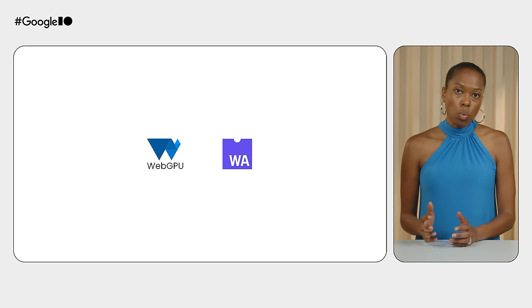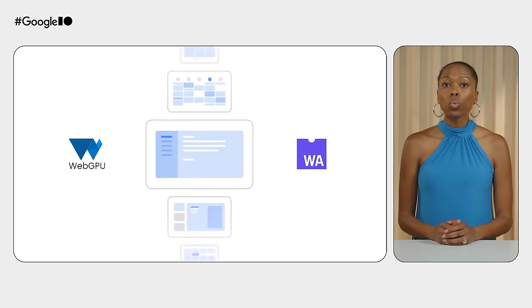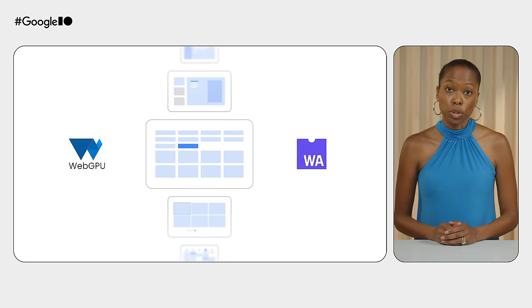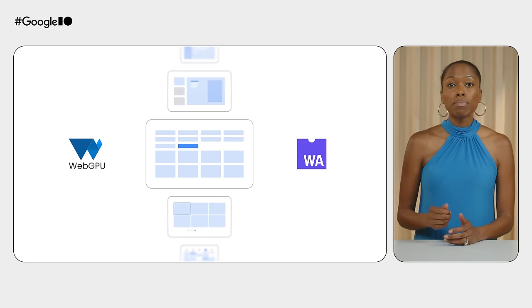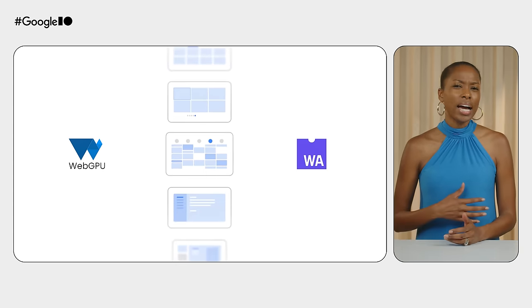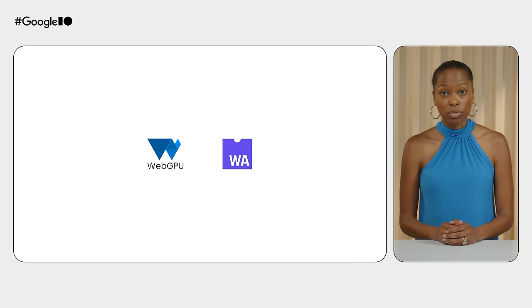We know that AI models can be costly and cumbersome to run, so we're committed to ensuring AI models can run quickly and efficiently. With WebGPU and Wasm as the backbone for on-device AI on the web, we introduce new improvements like 16-bit floating-point values in WebGPU, and Memory64 and JavaScript promise integration in Wasm, to make AI run even faster at scale on a vast majority of devices.